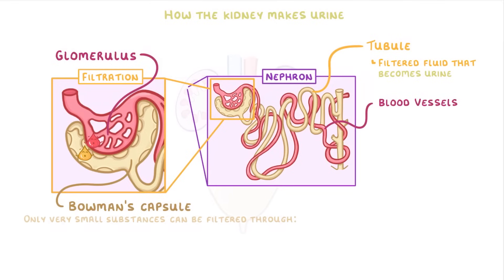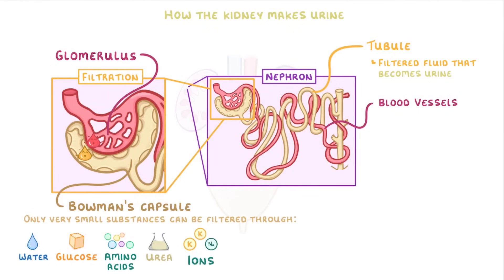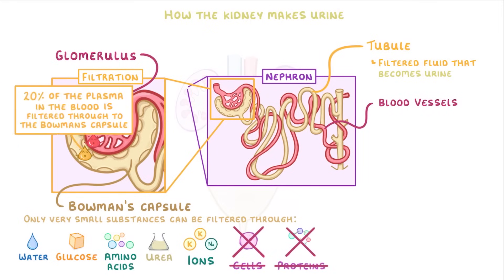Importantly, only very small substances can be filtered through to the Bowman's capsule. So only things like water, amino acids, urea, glucose, and ions — not anything large, like cells or proteins. Overall, only about 20% of the plasma in the blood is filtered through to the Bowman's capsule as it passes through the glomerulus. The rest of the blood just carries on through the blood vessels.